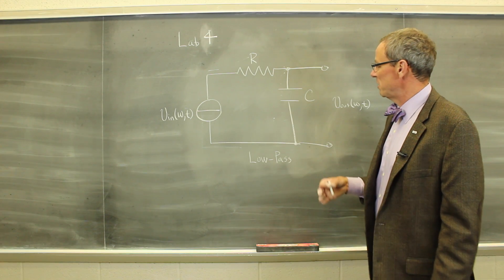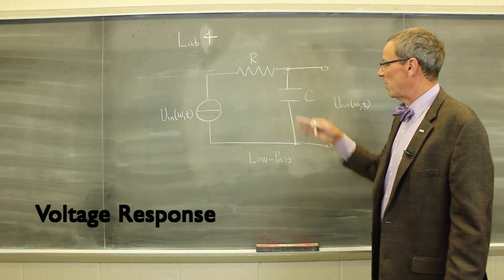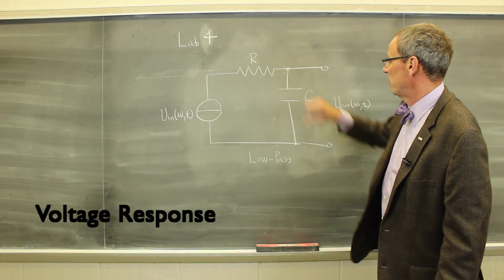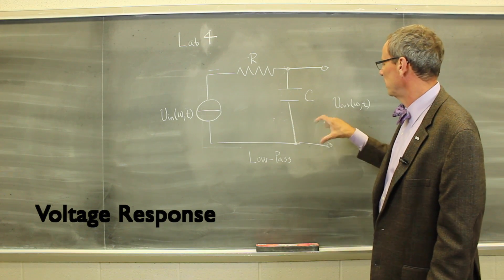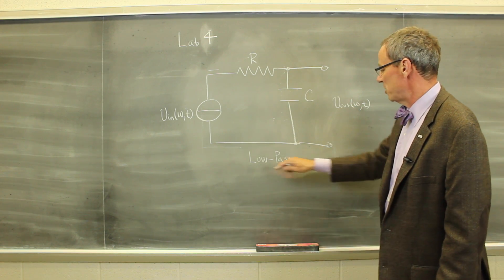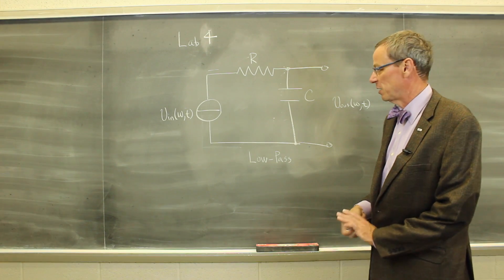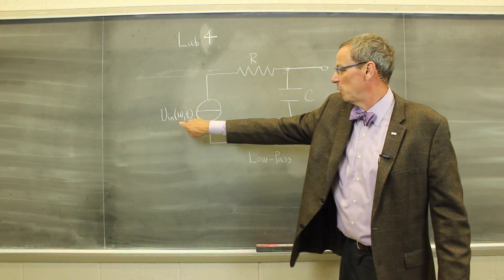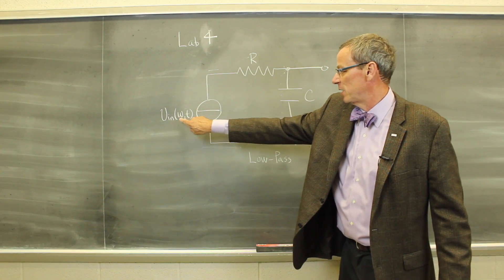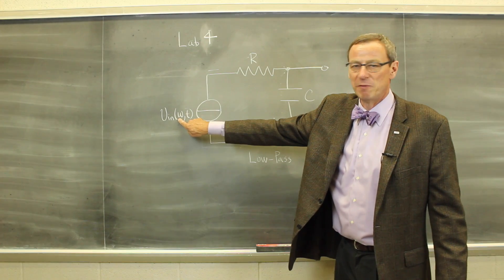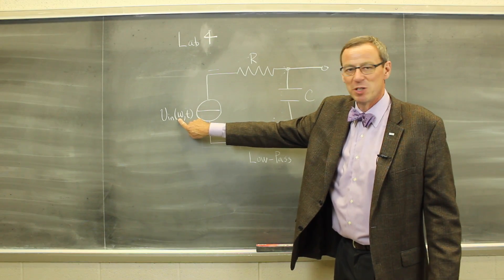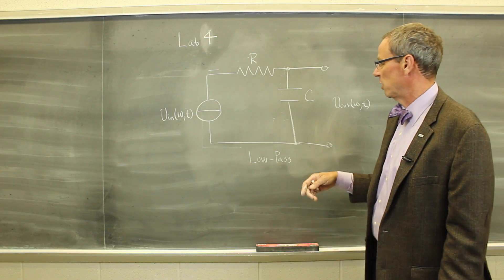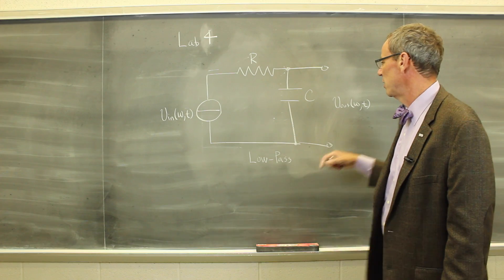In lab four, we're going to be measuring the voltage response of various filters. We have here an RC filter, and we're measuring it in the so-called low-pass configuration. We have an input voltage as a function of time, and we're going to vary the frequency omega from some very low value to as large as we can go on our function generator.